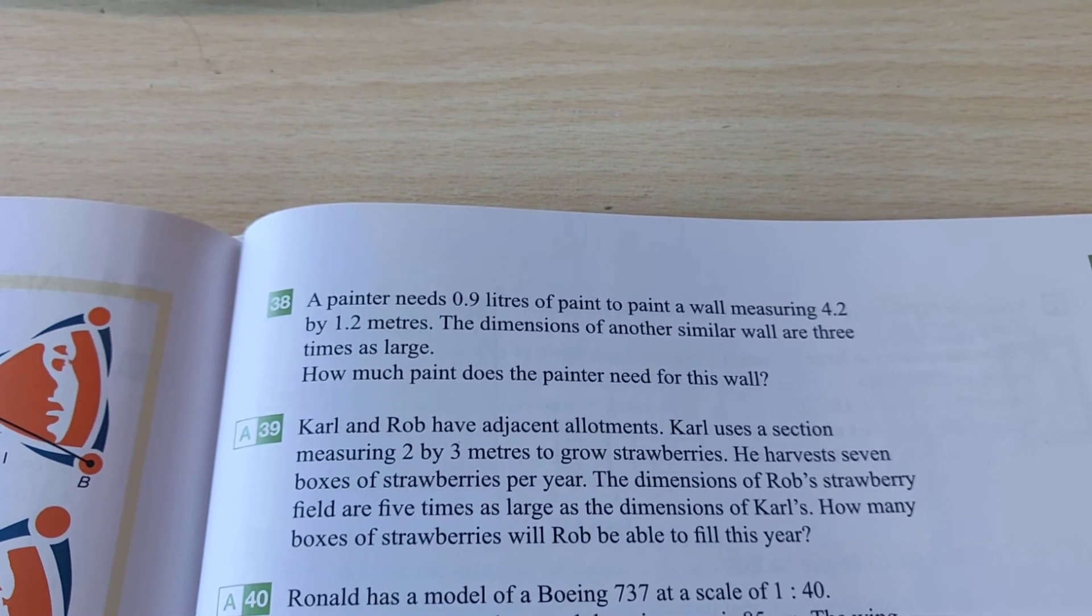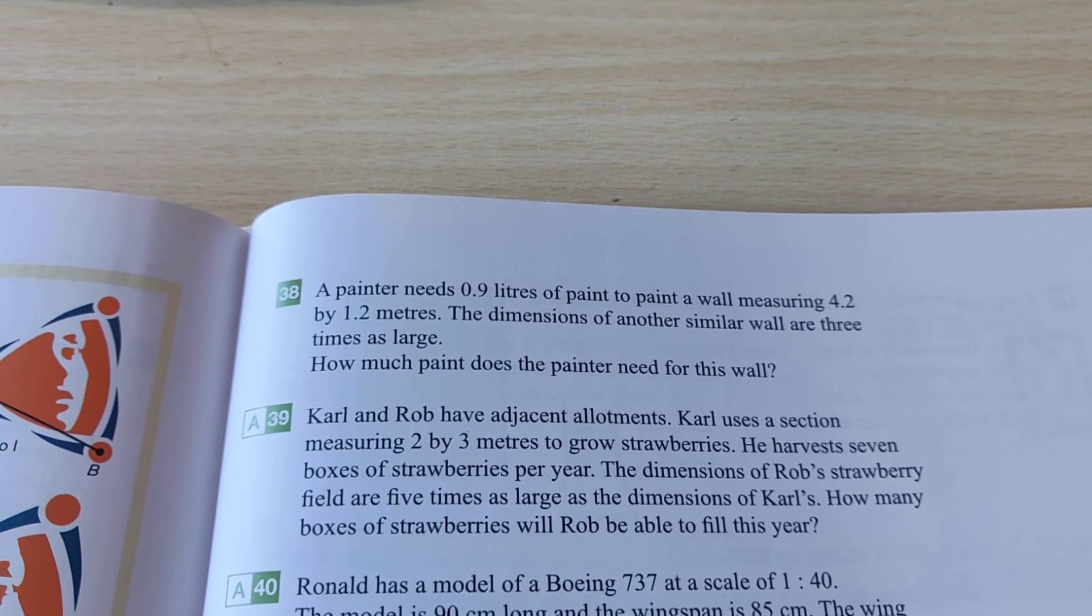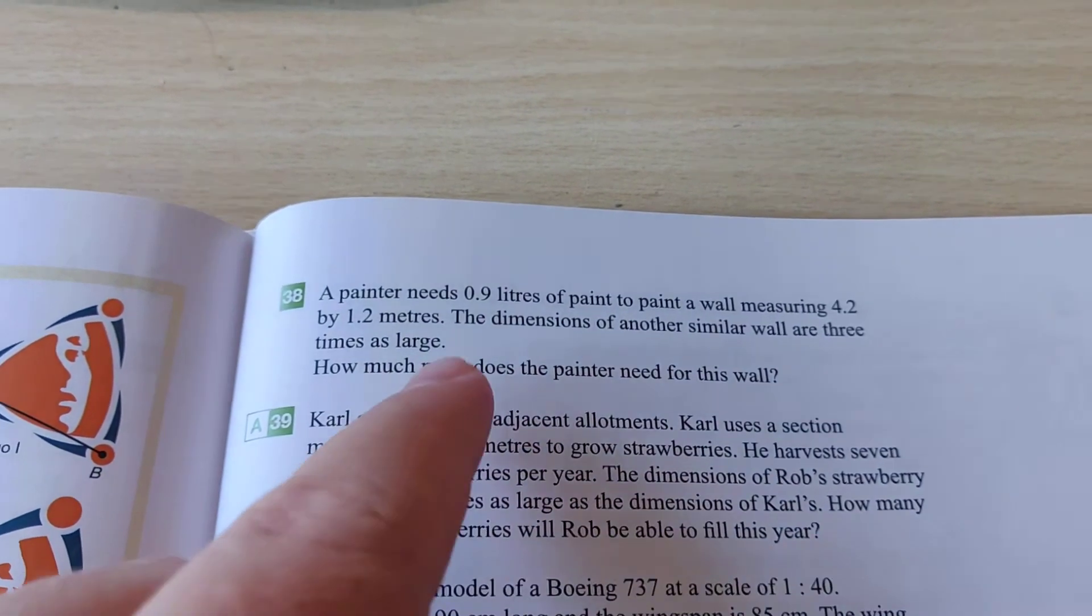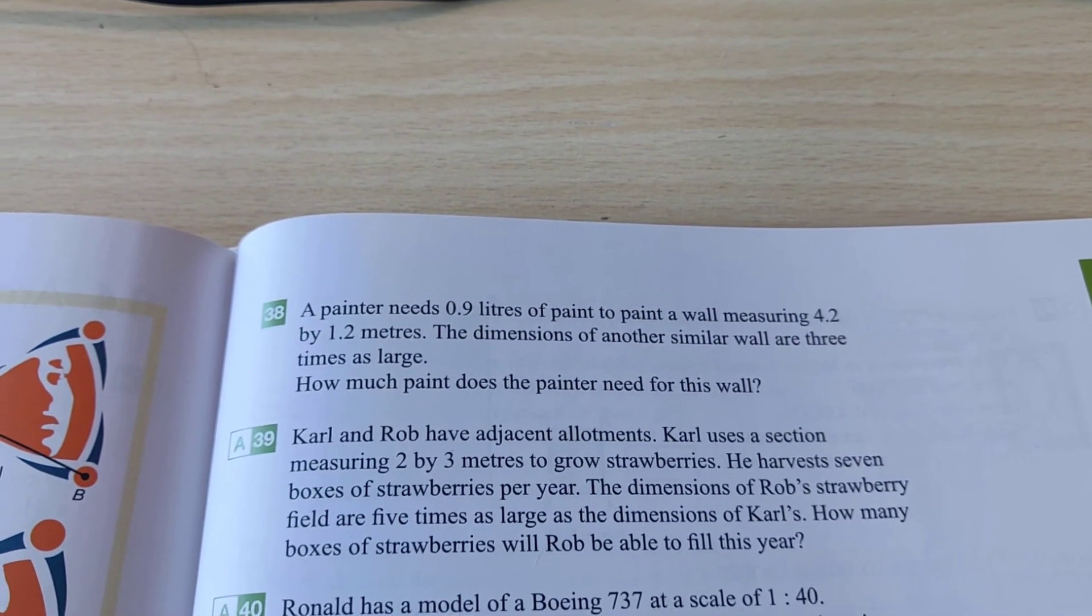Okay, so what you could do is you could calculate the area for the small wall, and then calculate the area for the new wall. But you actually don't have to, because we already know how much paint you need, 0.9 liters. And also this is about an area.